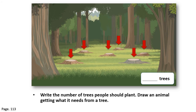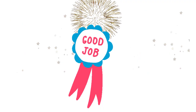Our question is: how many trees should the people plant? They should plant six trees. Our second question is to draw an animal getting what it needs from a tree. We can draw a bird in a nest — the tree helps the bird get what it needs, and the bird gets its shelter from the tree. Well done, good job everybody!